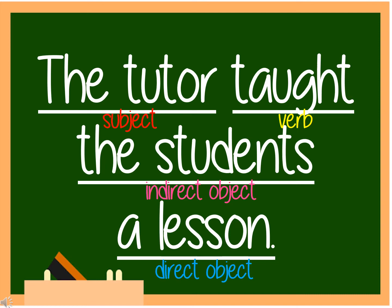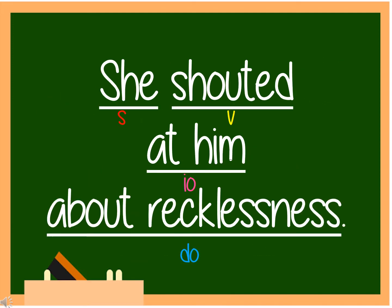Whom does the tutor taught a lesson to? The students. And a lesson is our direct object because it answers the question 'what.' What did the tutor teach to the students? The answer is a lesson. Another example: 'She shouted at him about recklessness.' She is our subject. Shouted is our verb. At him is our indirect object. To whom did she shout? At him. And recklessness is our direct object — it answers the question what she shouted about.